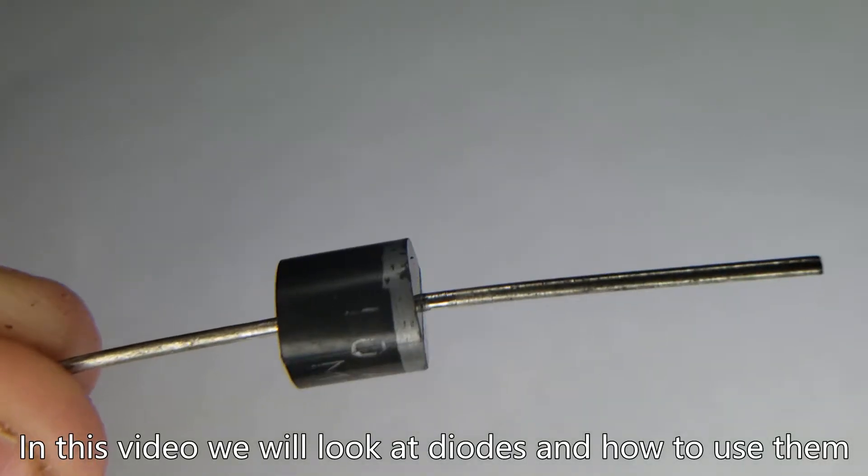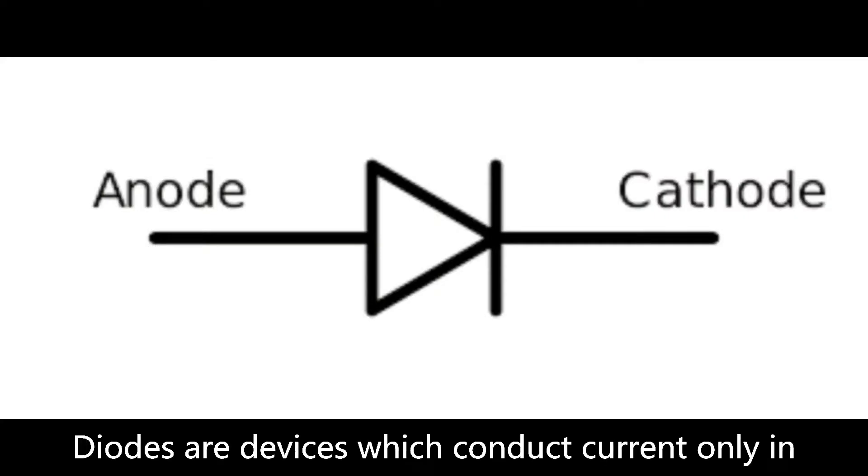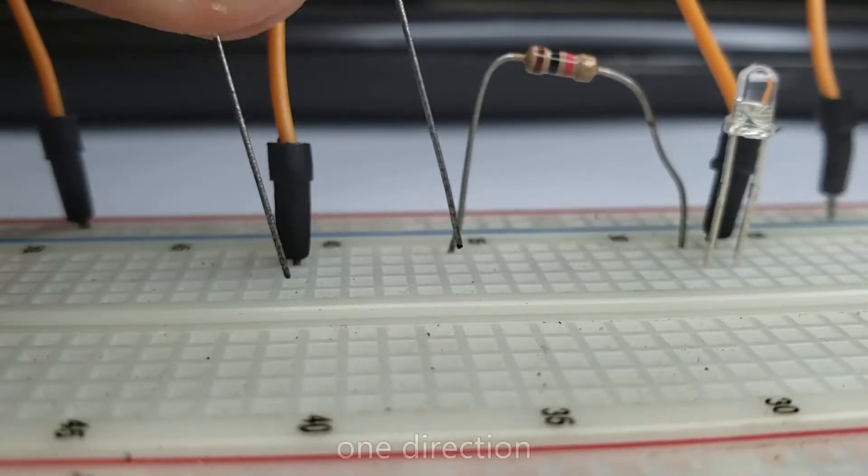In this video, we look at diodes and how to use them. Diodes are devices which conduct current only in one direction.